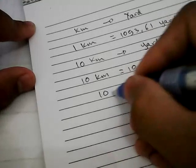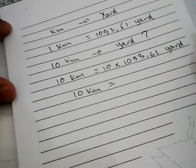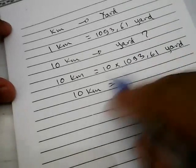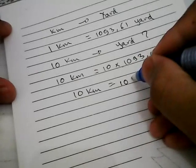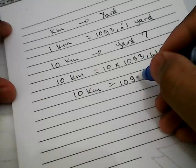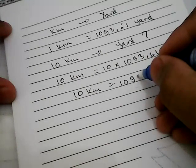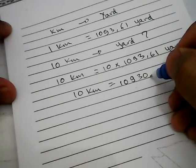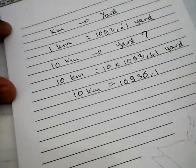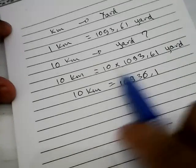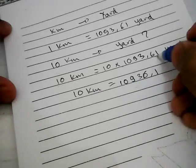So the result of this equation is 10 kilometers is equal to 10,936.1, because we multiplied this number with 10, which will move this comma over here to here.